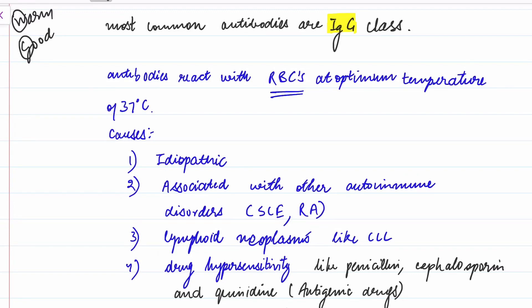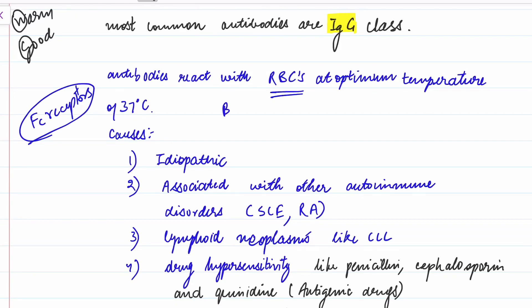In warm antibody immunohemolytic anemia, antibodies react with RBCs at an optimum temperature of 37 degrees Celsius. IgG-coated RBCs bind to Fc receptors of phagocytes, and these phagocytes cause partial phagocytosis by removing the RBC membrane.